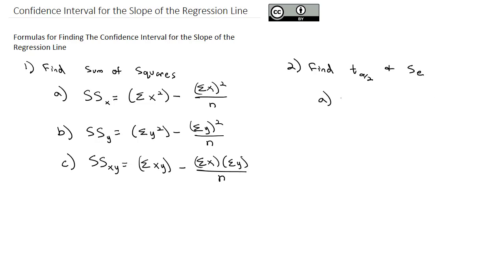The critical value, t sub alpha over 2, is going to come directly from Excel. We're going to do a t dot inverse dot two-tailed test, where we list alpha and the degrees of freedom. Alpha is the area in the tails, just like other confidence intervals.